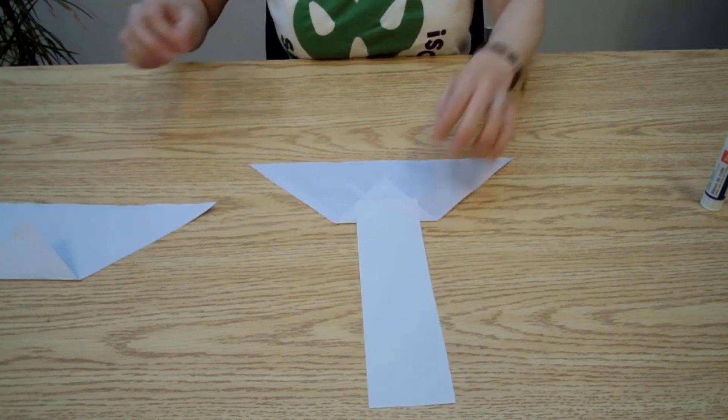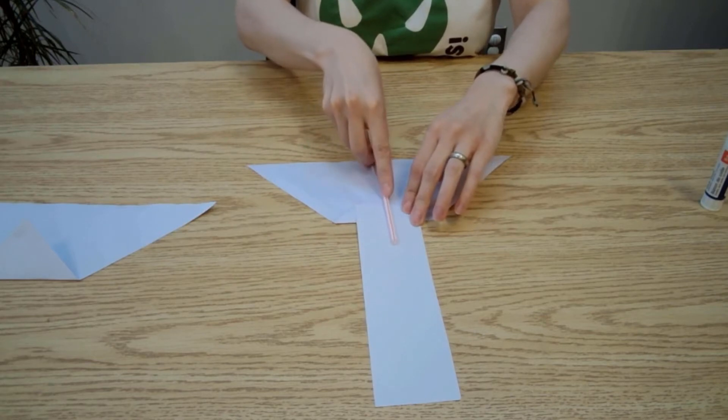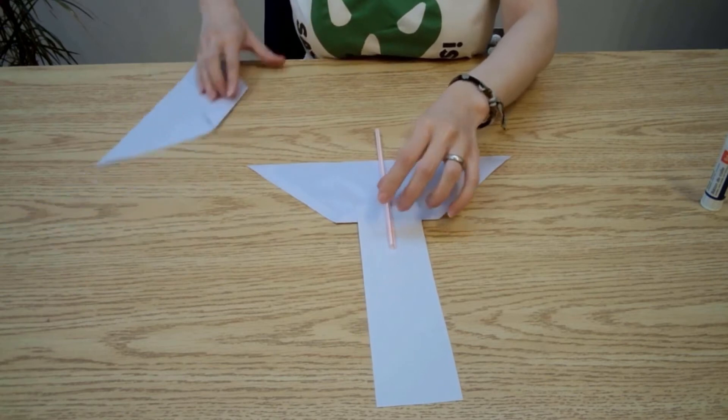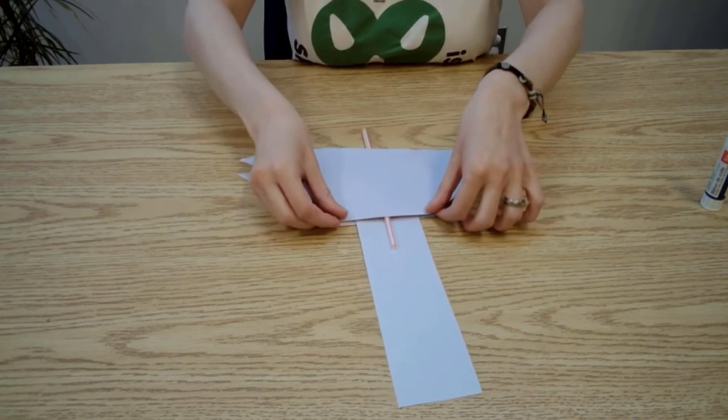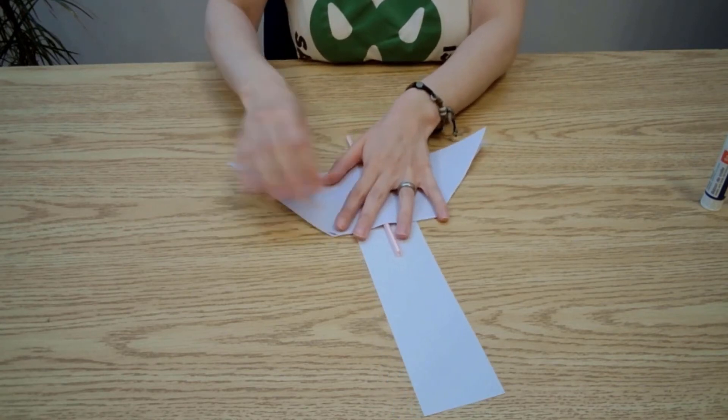Next lay your straw under the trunk. Be sure you have part of the straw exposed along the long flat end of the triangle piece. Place the second triangle piece over top. Be sure the folded part is face down.